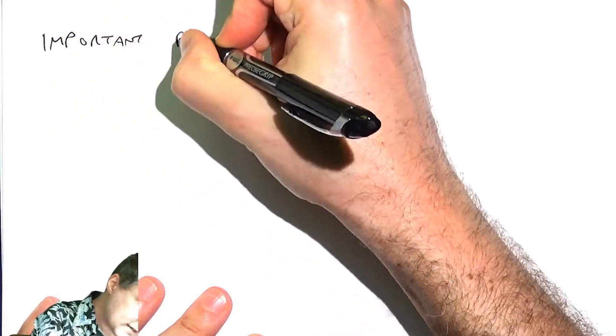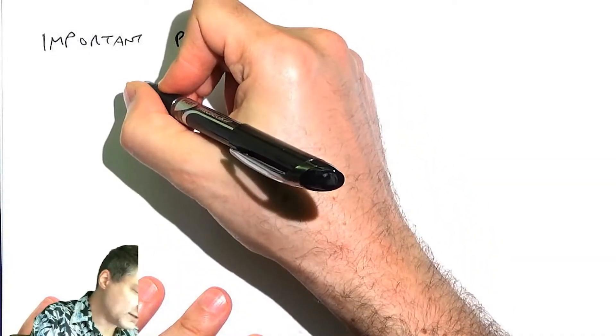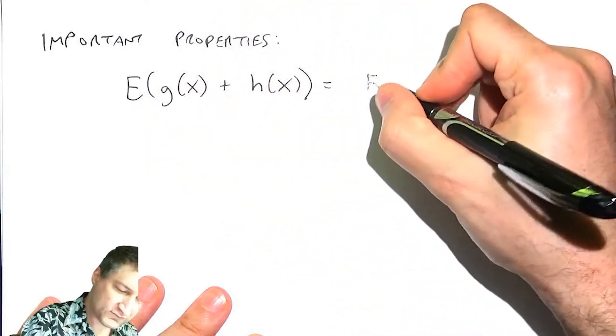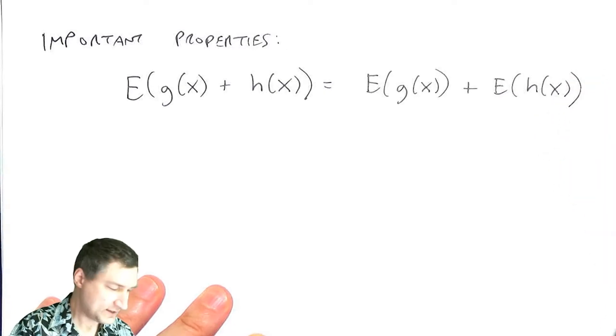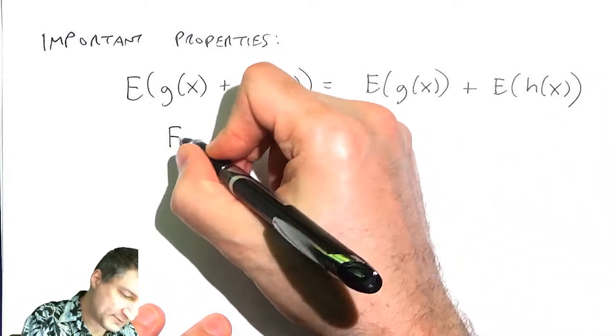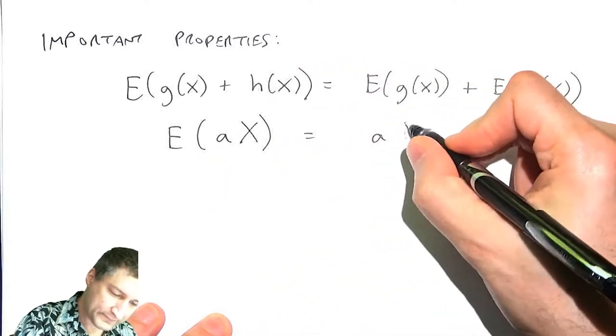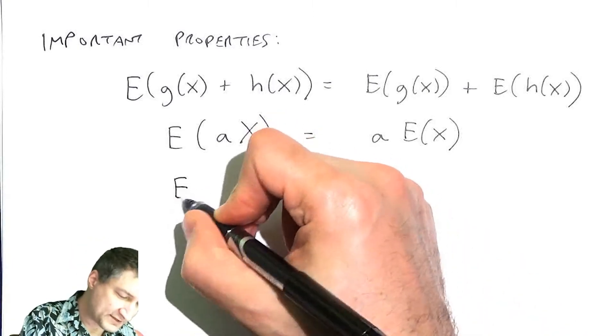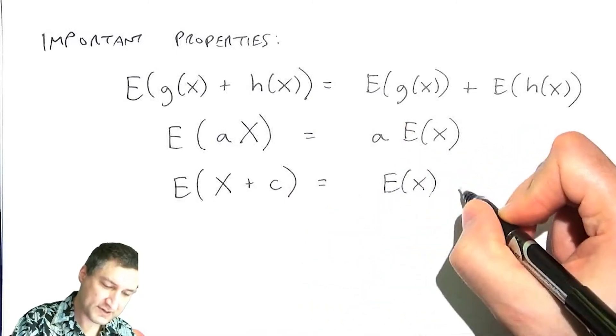So some important properties of the expected value—and I feel like I've already used some of these kind of implicitly. So expectation is linear, and what that means is that if I take the expected value of two things, I can just break it up into the expected value of the first thing plus the expected value of the second thing. Similarly, if I have a constant, like some constant like 2x, then I can take the constant out of the expected value part because this doesn't have any sort of randomness to it.